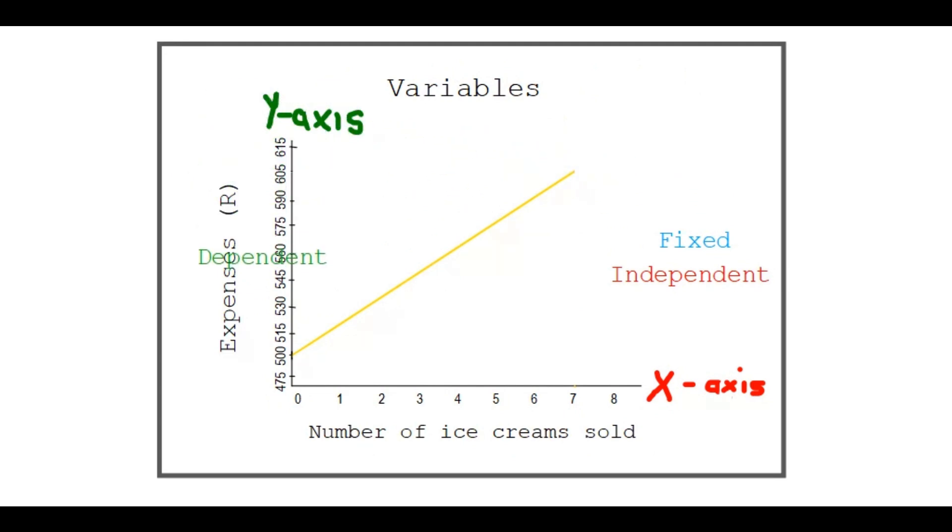Now we need to decide which one is dependent, fixed, and independent. The dependent variable is always the one on the y-axis, so that's your expenses, and the independent variable is then the number of ice creams sold, and that's your x-axis.